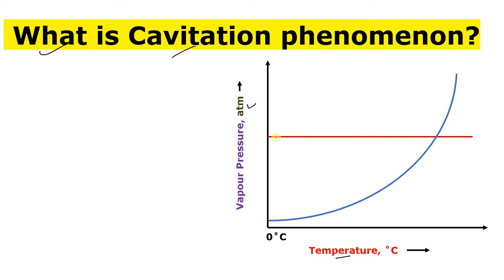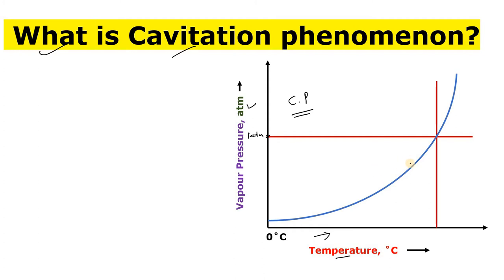On the X-axis there is temperature. Now if you see this line, that line is your constant pressure line — your temperature is increasing but your pressure is fixed. Let's suppose this pressure is 1 atm, and we know that water boils at 1 atm at 100 degrees Celsius.